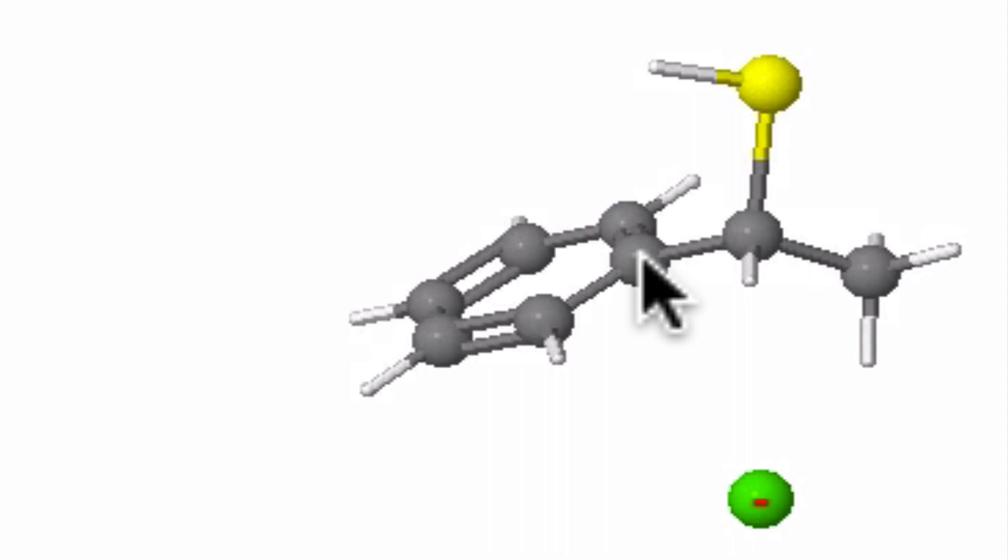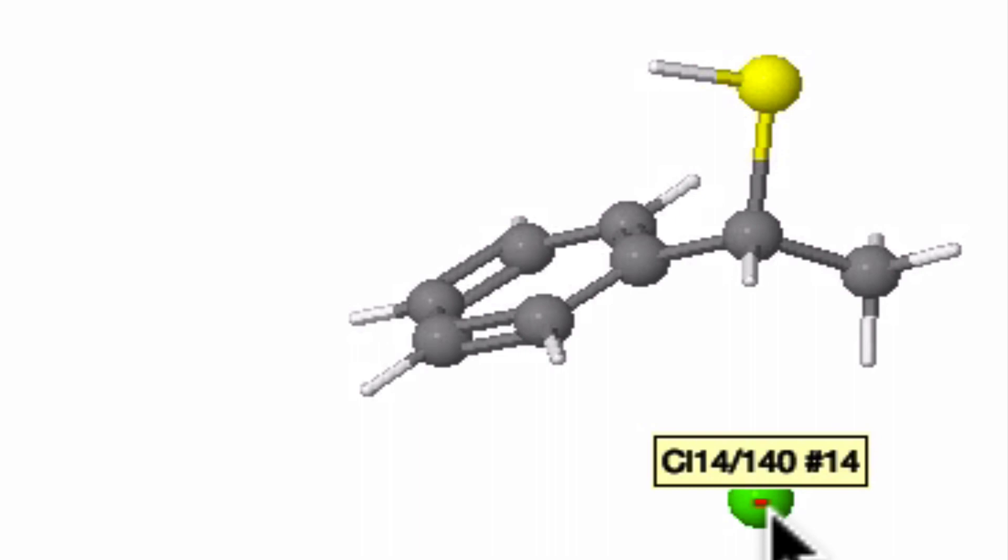Notice that in the product, the sulfur is positioned on the opposite side of the plane formed by the phenyl ring, hydrogen, and methyl group than the chlorine was in the original reactant. This is the essence of inversion of configuration. And you should always visualize backside attack whenever you know an SN2 mechanism is operating. It's a good practice to get into even for substrates that don't contain a stereocenter at the electrophilic position.